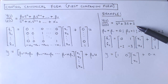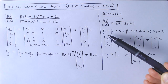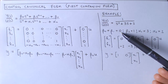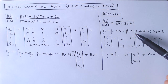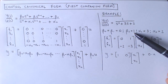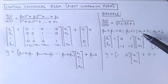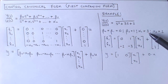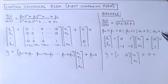In this transfer function, the order of the system is n equal to 2. The coefficients beta 0 and beta 1 are both 0 and beta 2 is equal to 1. The coefficient alpha 1 is equal to 3 and the coefficient alpha 2 is equal to 2.